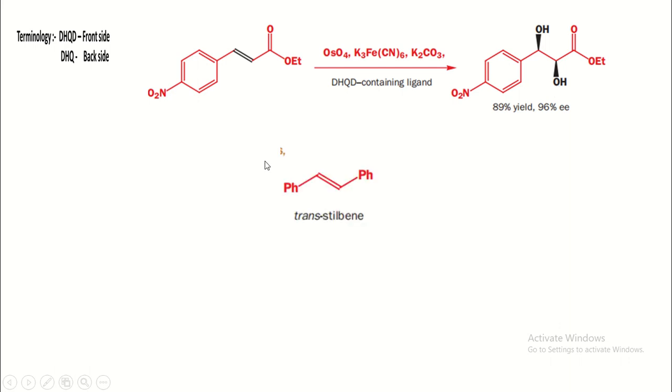Now in the next reaction, that is trans-reactant is trans-stilbene. Now in this case, the ligand is DHQ. At that time, the reaction takes place from the back side. Therefore, easily assign the stereochemistry of the OH groups.